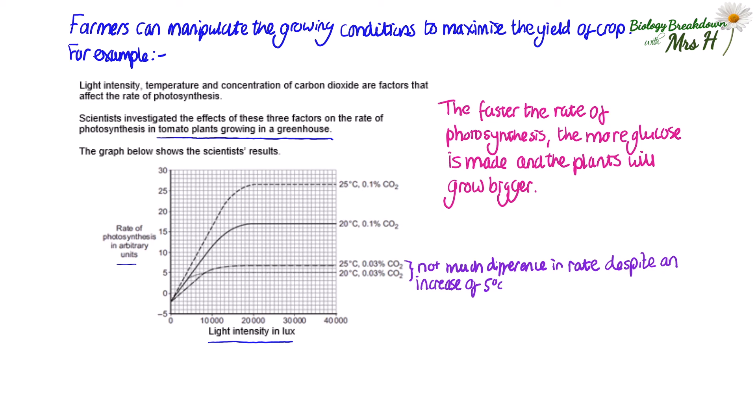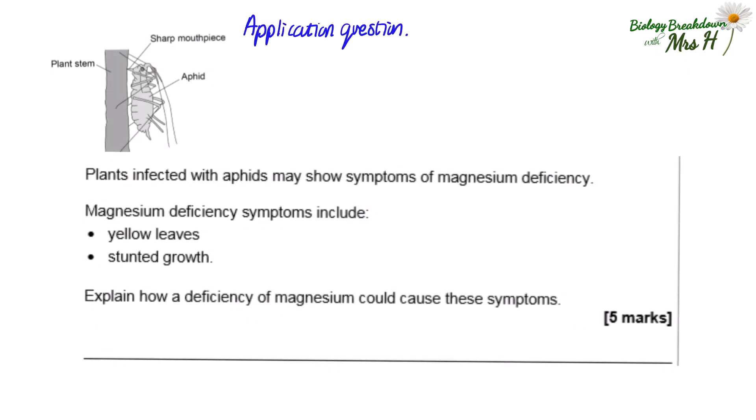One last question. When you see a question like this, you may not realize this is to do with photosynthesis. This kind of question comes up a lot in exams and is worded differently or maybe put in a different context, but the answers are always the same. So let's work it through. Plants infected with aphids may show symptoms of magnesium deficiency. Magnesium deficiency symptoms include yellow leaves and stunted growth. Explain how a deficiency of magnesium could cause these symptoms.